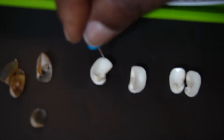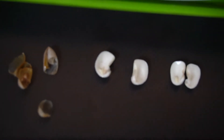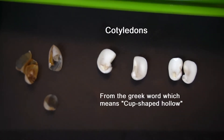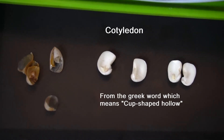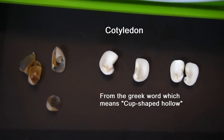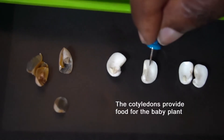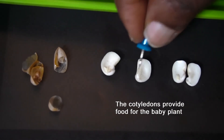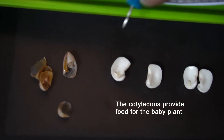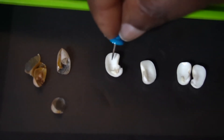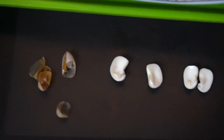This part of the seed is called the cotyledons. Cotyledon is from the Greek word meaning cup-shaped hollow. They provide food for the baby plant, or the embryo. These are the cotyledons that provide food for the baby plant, the embryo.